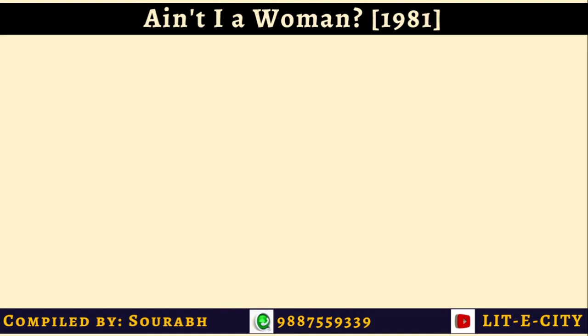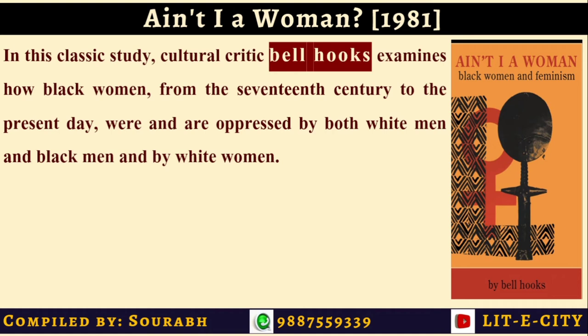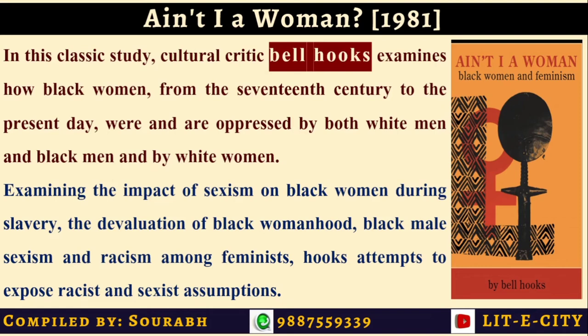Ain't I a Woman, published in 1981, is about black women and feminism, written by bell hooks — one of the most prolific and profound feminist voices in America. The book examines how black women from the 17th century to the present day were and are oppressed by white men, black men, and white women alike — making them doubly or triply marginalized. It examines the impact of sexism on black women during slavery, the devaluation of black womanhood, black male sexism, and racism among feminists.